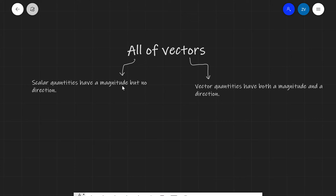First off, we're going to focus on scalar quantities, which have a magnitude but have no direction. For instance, length is a scalar quantity. Mass — it doesn't make sense to say that something has a mass of five kilograms at a direction of five degrees to the north. It's a scalar quantity, it only has a magnitude. Speed is another quantity which is a scalar. Temperature as well, it has no direction.